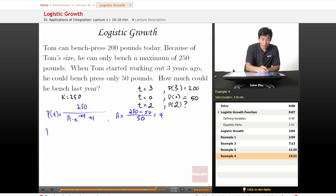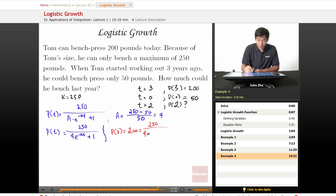So then our growth model becomes p of t equals 250 over 4 times e to the negative kt plus 1. Well, it's not finished because we still have to solve for this k value, this constant. So we know that right now he can bench 200 pounds. So p of 3 equals 200 equals 250 over 4 times e to the negative k times 3 plus 1.